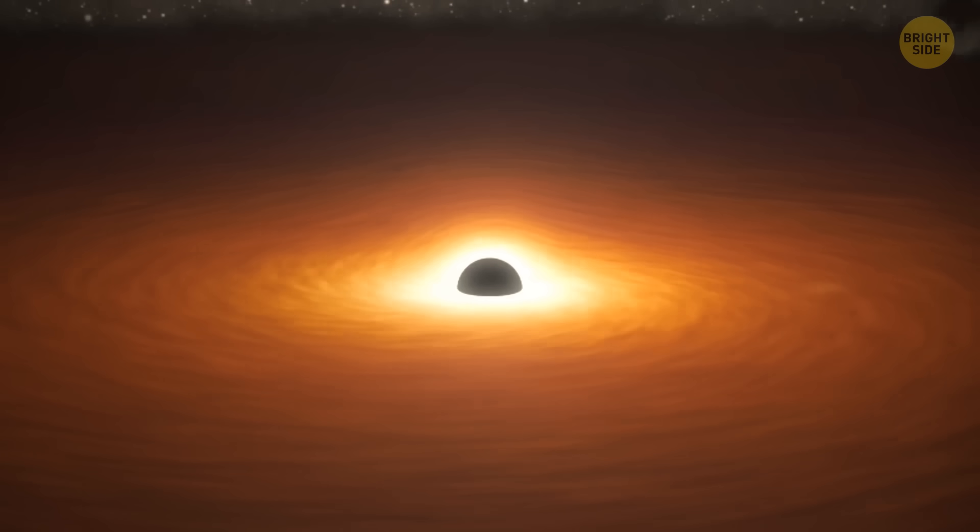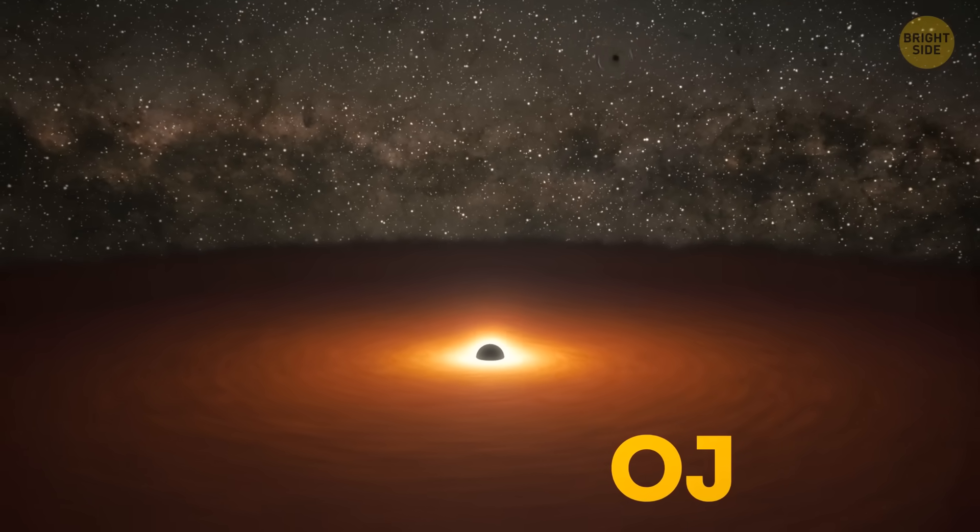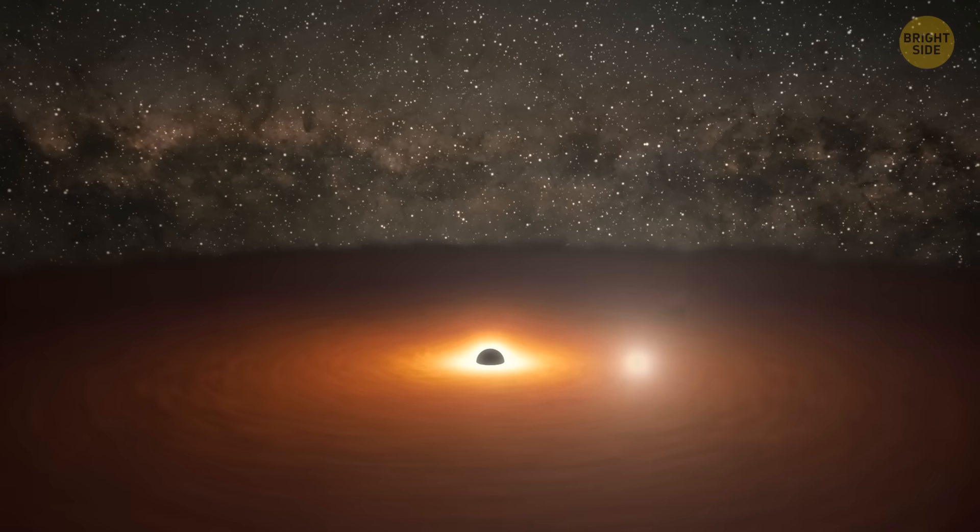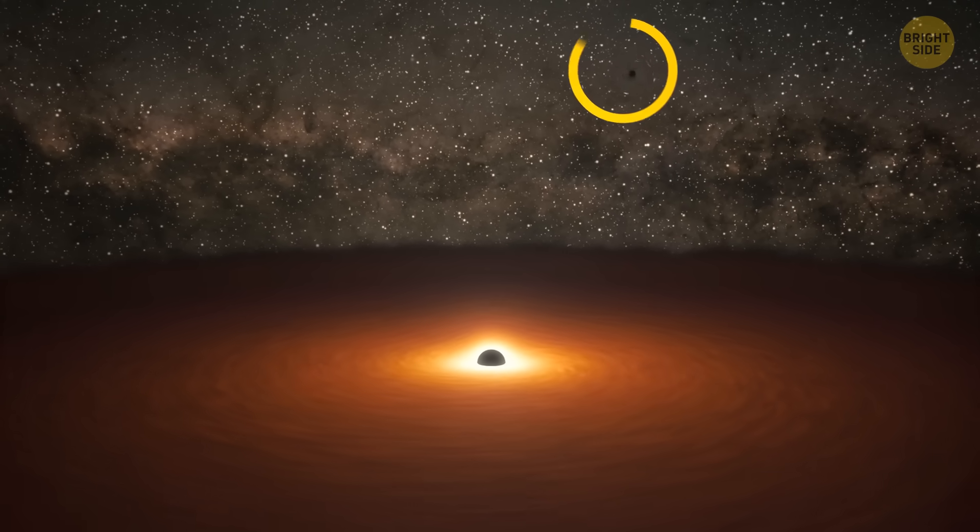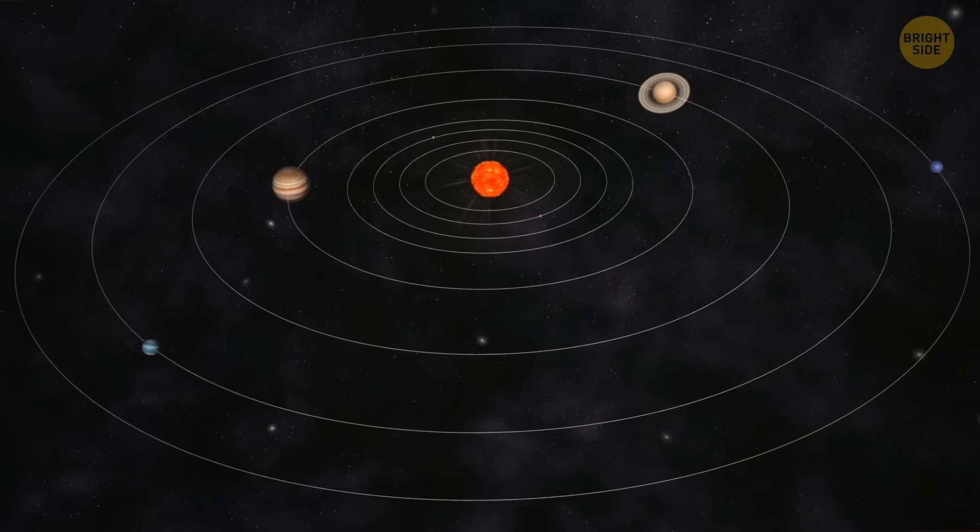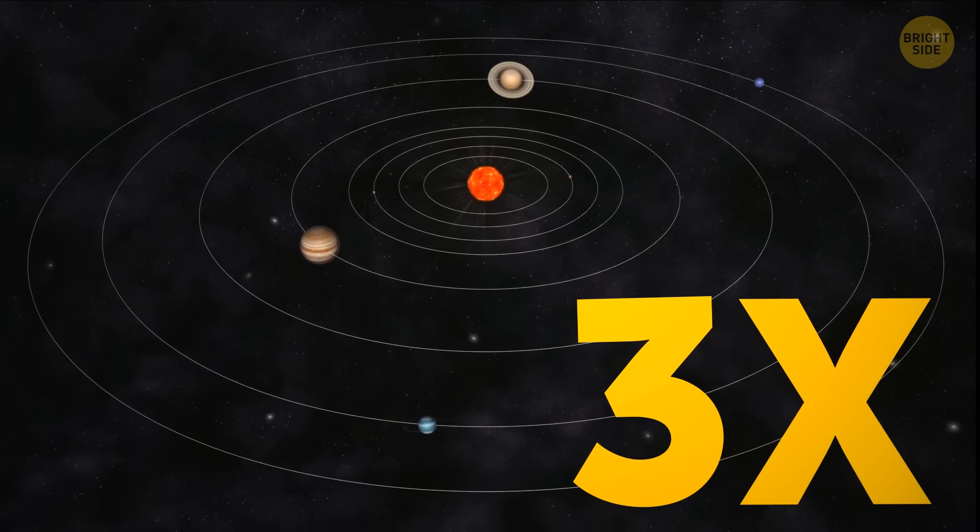The ultramassive black hole at the center of the galaxy, OJ 287, has 18 billion solar masses. It's so gigantic that it has another black hole orbiting it. It would also easily fit not one, but three solar systems inside of it.